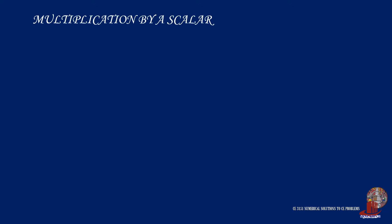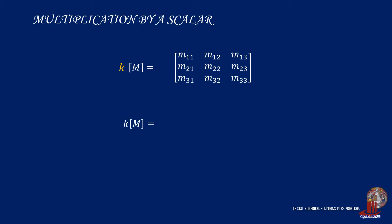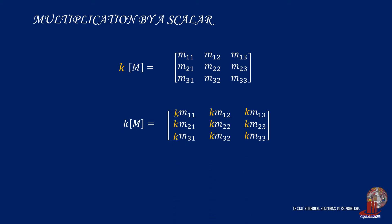As discussed previously, matrices are like vectors with their i, j, and k components. The first operation is multiplying matrices with a scalar. The scalar is just a constant either multiplied to or extracted from the matrix. In the case of matrix M, which has a size of 3 by 3, being multiplied by a constant or scalar k, the result is the matrix itself with the scalar k applied to all elements.